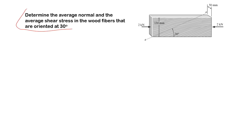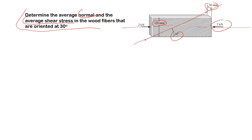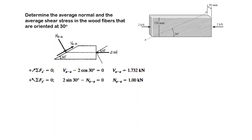Next problem: we have a wooden board, 150 mm long and 50 mm thick, with a 2 kilonewton compressive force applied horizontally. Looking closer at the wooden board, the wood fibers are oriented at 30 degrees. The question is to find the normal and average shear stress in the wood fibers.